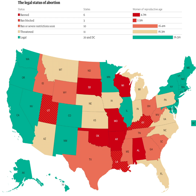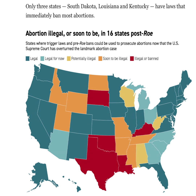Some states have trigger laws or pre-Roe bans that can be used to prosecute abortion now that the U.S. Supreme Court has overturned the landmark abortion case. I'm also going to show you a map of all the states — some legal, some potentially illegal, some soon to be illegal, some already banned. Three states have laws that immediately banned most abortions: South Dakota, Louisiana, and Kentucky.